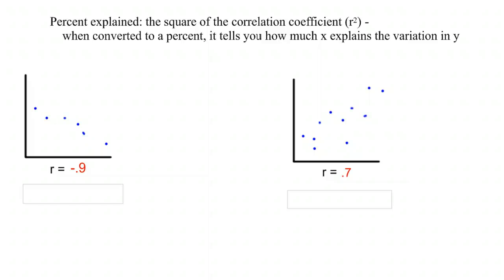Percent explained. This is where you take your r and you square it. So it doesn't matter if your slope is going down or going up because we're going to take whatever value we have and we're going to square it. So in this first example, r equals negative 0.9. You square that. r squared equals 0.81. And so that as a percent would be 81%.